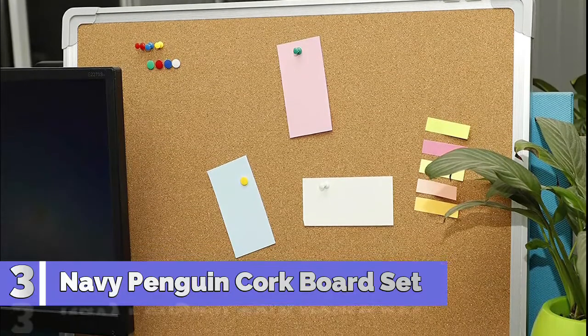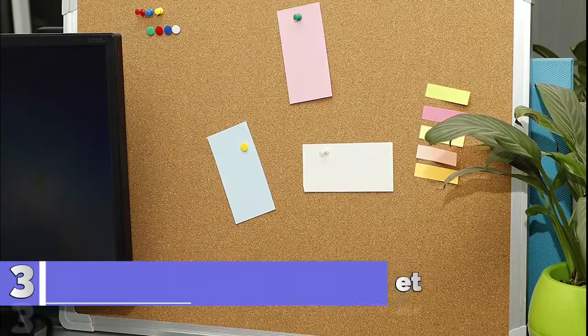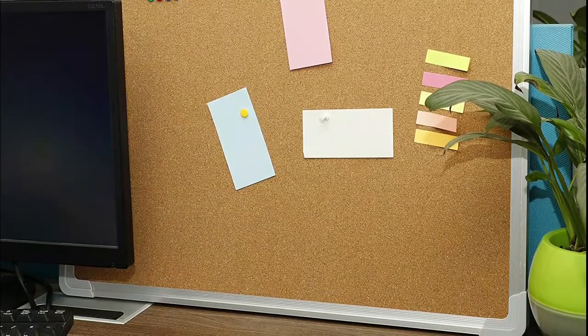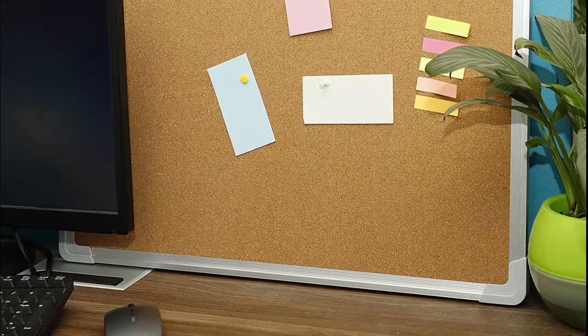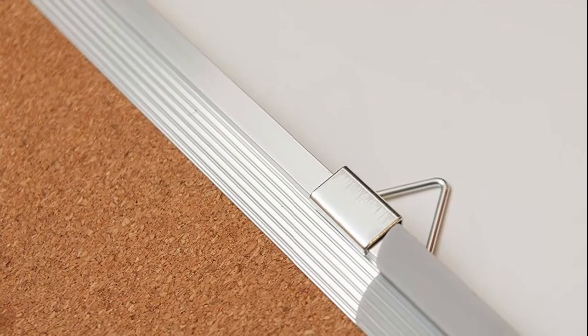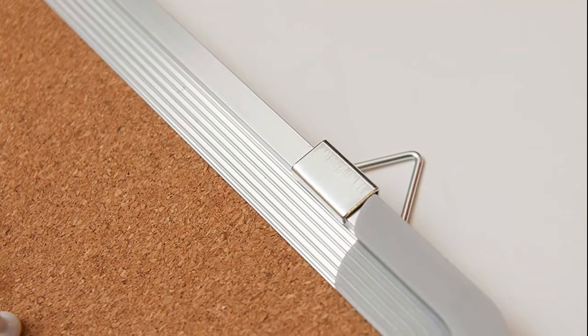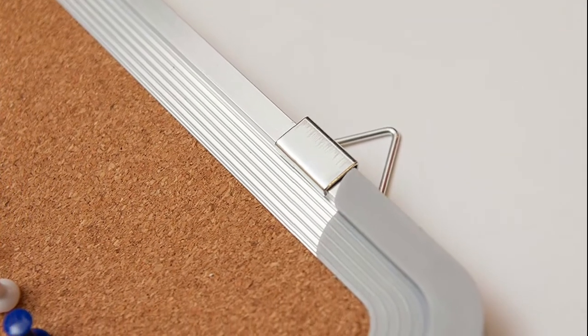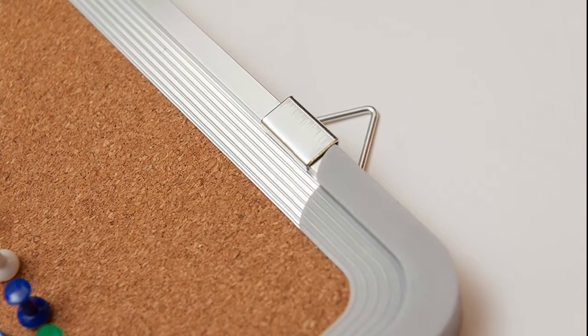Number 3, Navy Penguin. Contains one bulletin corkboard and 10 colored push pins as accessories. Exact size of the tack board is 24 by 18 inches, hangable in landscape horizontal orientation only. Moveable hanging hooks allow to adjust distance easily. This personal pinboard is wall mounted.